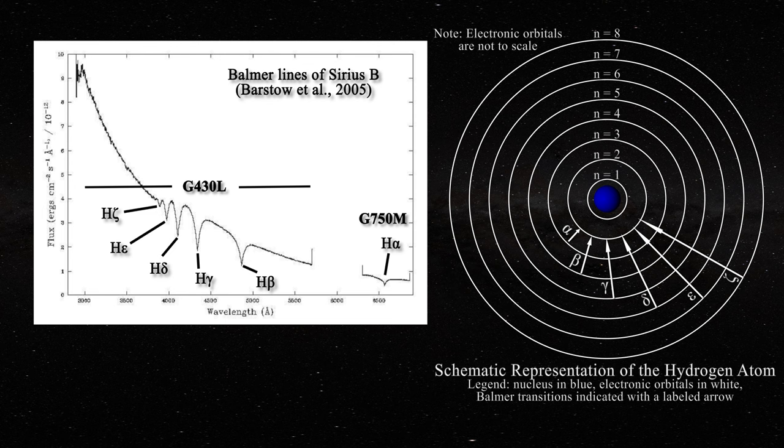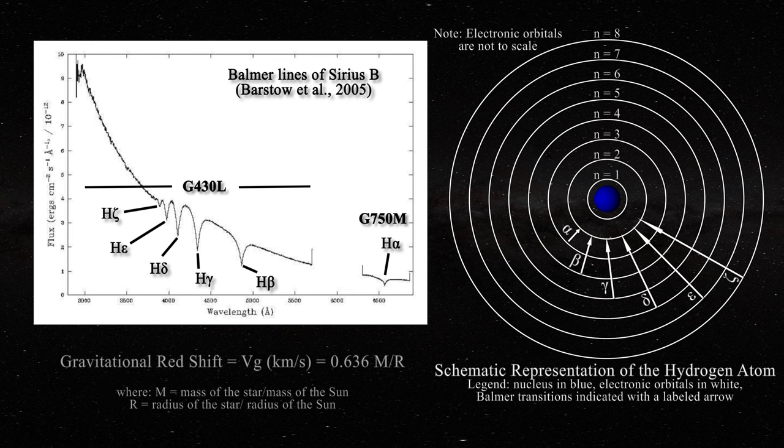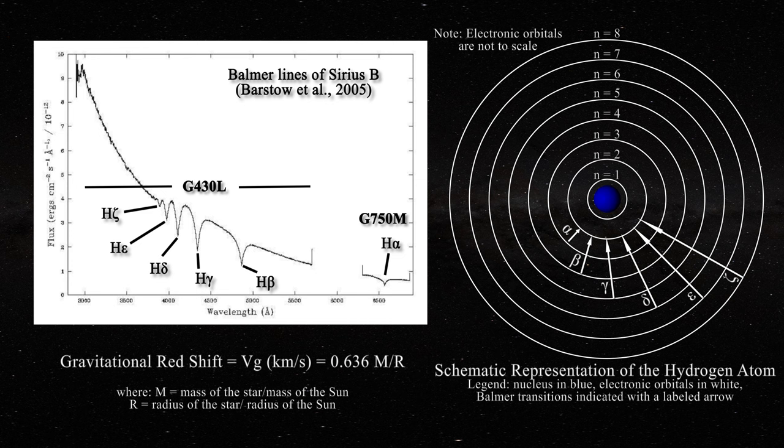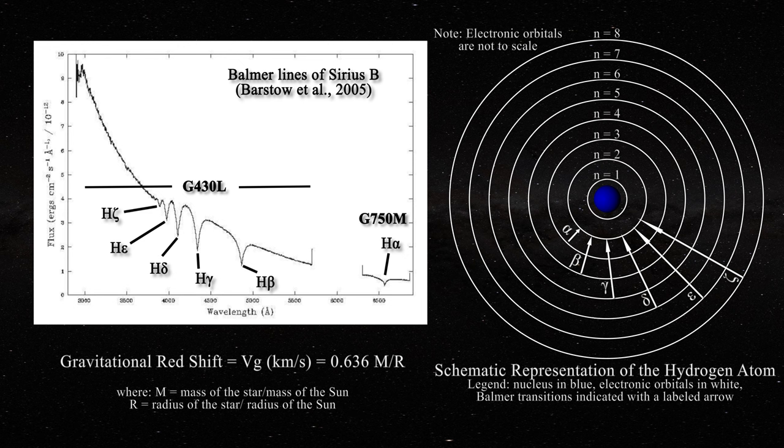Therefore, astronomers focus on the redshifts of Balmer lines in the optical range. The hydrogen redshifts in DA white dwarfs are used to argue for a small radius and an enormous density in the dwarf. Remember this equation, which tries to link a redshift of a star: V sub g is redshift in km per second, m is the number of solar masses, and r is the radius of the star compared to the Sun. The mass is well known from observing the orbit of Sirius B.